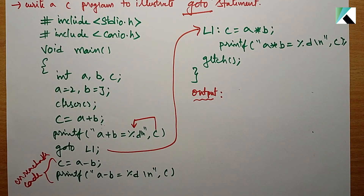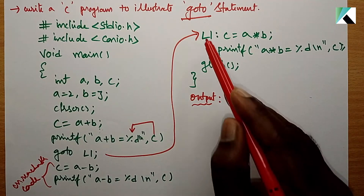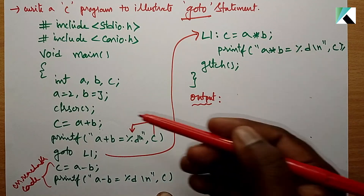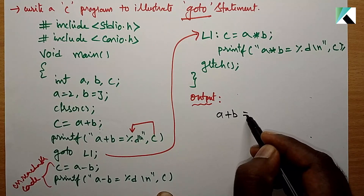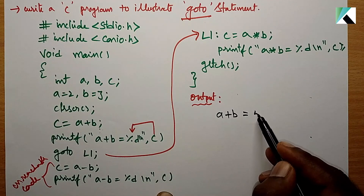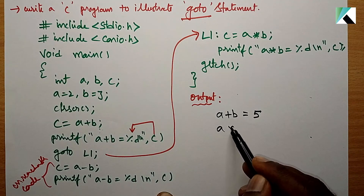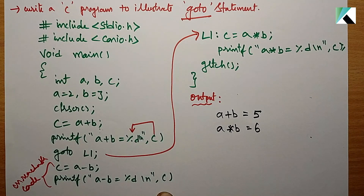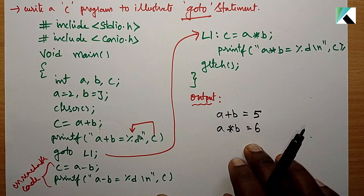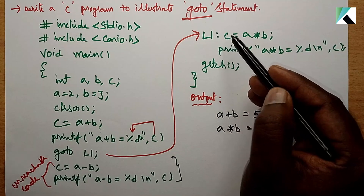When we eliminate unreachable code, we optimize the program. The output of this program: the first printf prints A plus B is equal to 5, and the multiplication printf prints A star B is equal to 2 into 3 is equal to 6. So that is the output of this goto statement example.